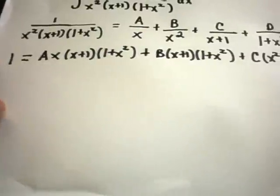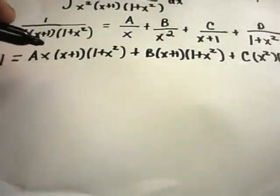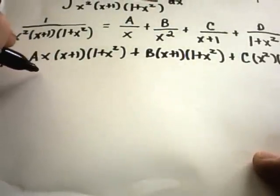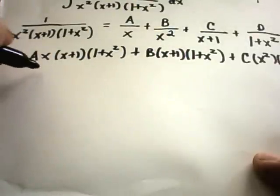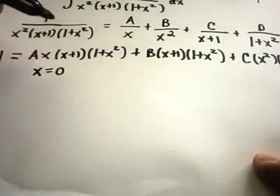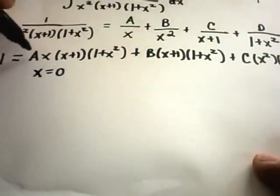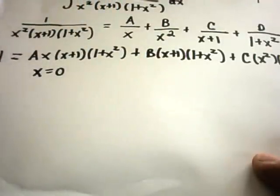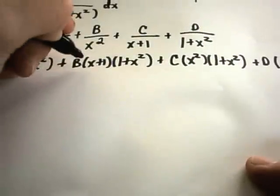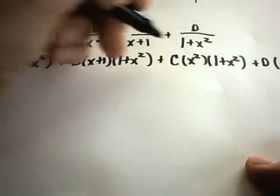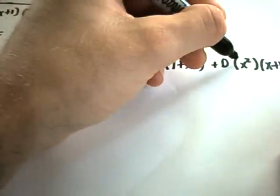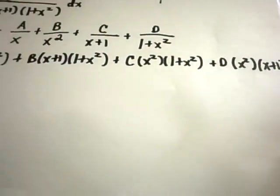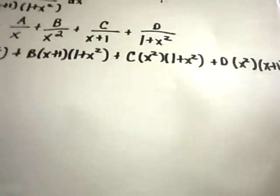The easiest approach here is to pick clever values of x that make things cancel out. Notice if you let x equal 0, the first term cancels. If you plug 0 in for x, the b term will remain, while the c term and d term will also cancel out.